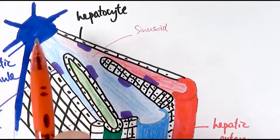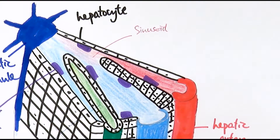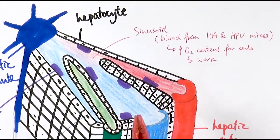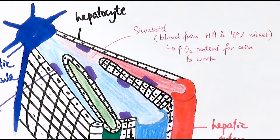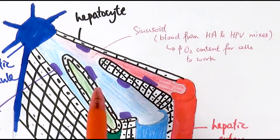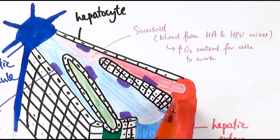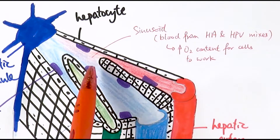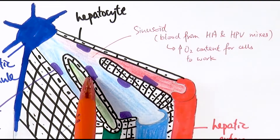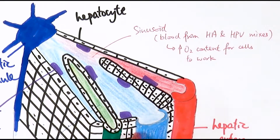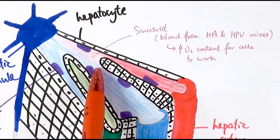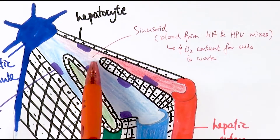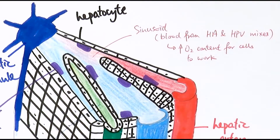All of the blue and red bits — the whole space — is called the sinusoid. The sinusoid is a space where the blood from the hepatic artery and the hepatic portal vein actually mixes. This is actually very rare and probably the only place in the body where oxygenated blood and deoxygenated blood can actually mix together. The idea here is to increase the oxygen content for the cells to work. The hepatic artery carries oxygen and supplies it to the hepatocytes and Kupffer cells. The hepatic portal vein carries all the toxins, amino acids, and nutrients, and they need somewhere to mix in order for the cells to process — that is the aim of the sinusoid.